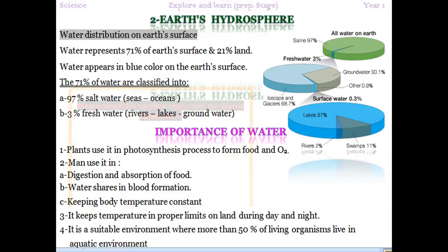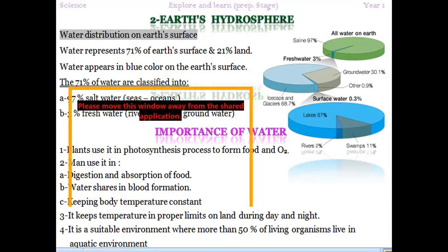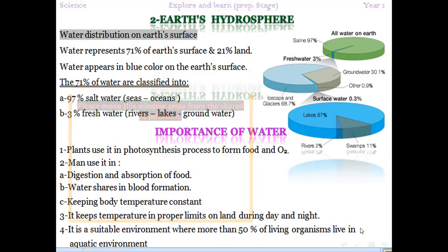What is the importance of water? Plants use water to make photosynthesis and to give us food and oxygen. Water is needed by humans because it helps in the digestion and absorption process. Water shares in blood formation and keeps the body temperature constant or steady. It keeps the temperature in proper limits, even if the weather changes day and night. Water is also a good solvent and suitable for the environment where more than 50 percent of living organisms can survive in the aquatic environment.